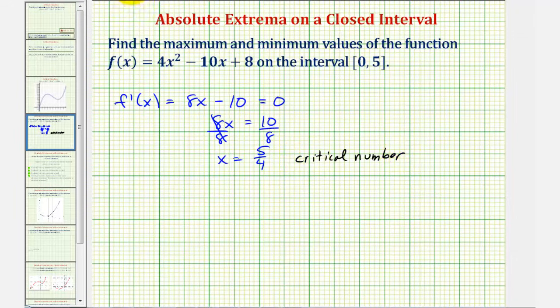So now we evaluate the original function at the critical number x equals five fourths, and at the endpoints of zero and five. So we'll have f of five fourths, f of zero, and f of five. The smallest of these values will be the minimum, and the largest of these values will be the maximum.